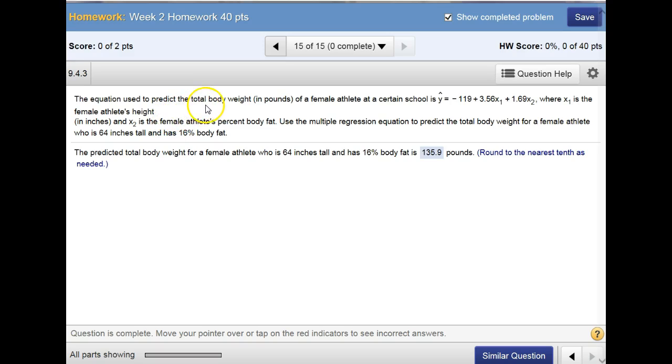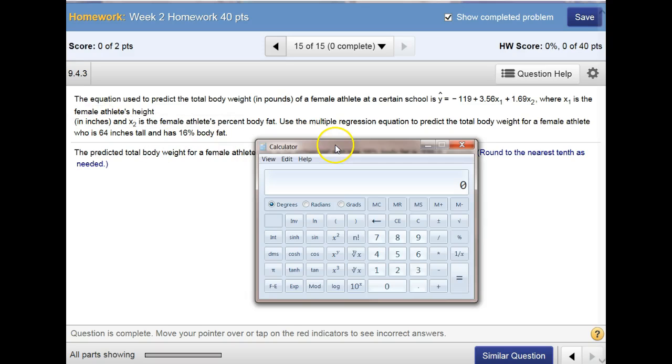It says the equation used to predict the total body weight in pounds of a female athlete at a certain school is y equals negative 119 plus 3.56 times x1 plus 1.69 times x2, where x1 is the athlete's height, x2 is the percent body fat. Use the multiple regression equation to predict the total body weight for a female athlete who is 64 inches tall and has 16 percent body fat.